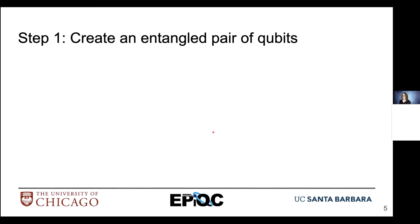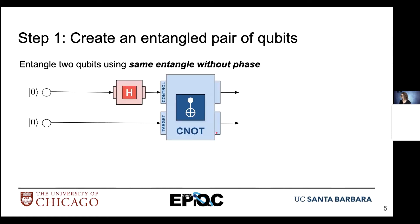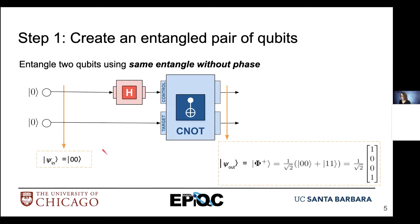Let's walk through the mechanics of superdense codes. First, we're going to create an entangled pair of qubits using our classic entangle-without-phase circuit — a Hadamard gate followed by a CNOT gate. Starting with two qubits in the basis state |00⟩, that produces an entangled state of one over square root of two times |00⟩ plus |11⟩.